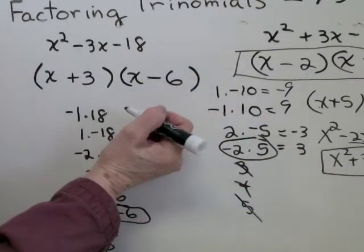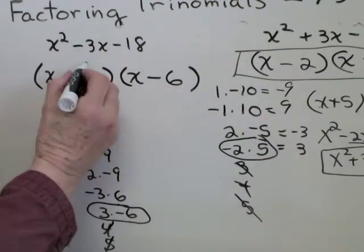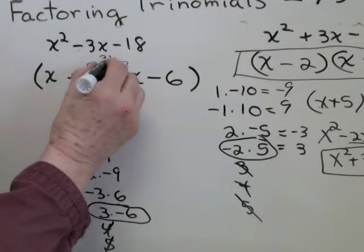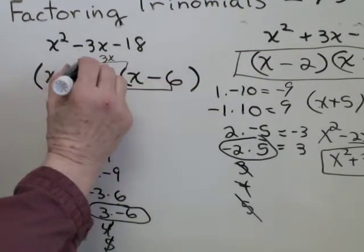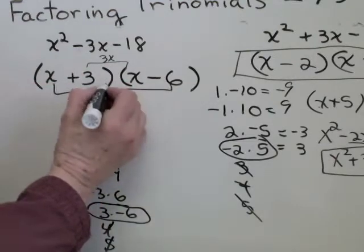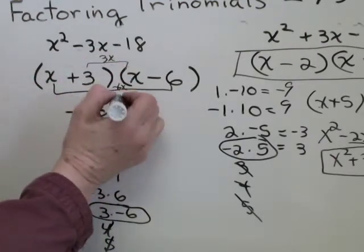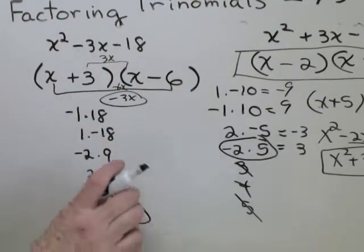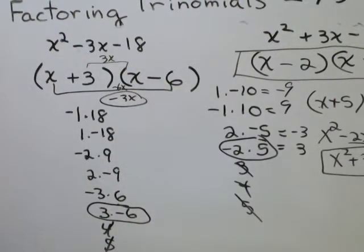Now, I have a shortcut for checking. I usually just check for the middle term. Multiply these two, 3x. And then multiply these two. So I call that the inners and the outers. Negative 6x. And then I add negative 3x here. So that one checked. All right. There's some examples of factoring trinomials. Good luck with your homework.